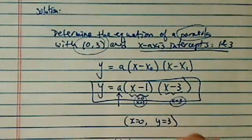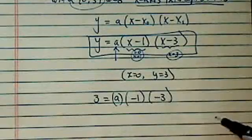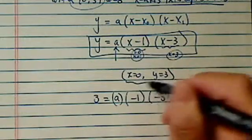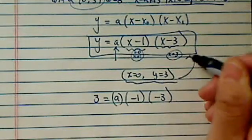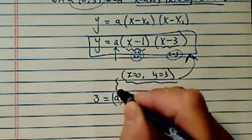3 is equal to a times 0 minus 1, which is minus 1, times 0 minus 3, which is minus 3. So all I did is I substituted the point into this equation. And the reason I'm doing that is I need an equation to find out what this variable a is.